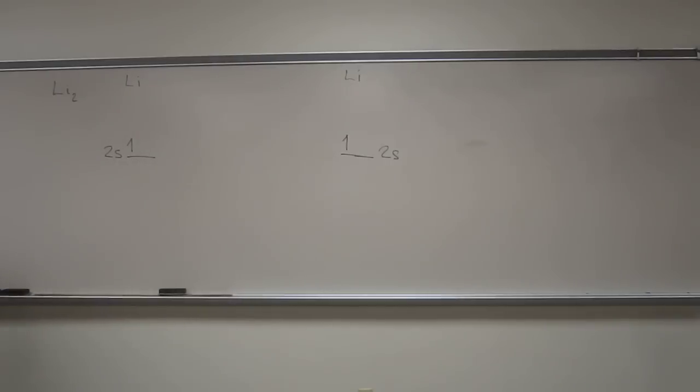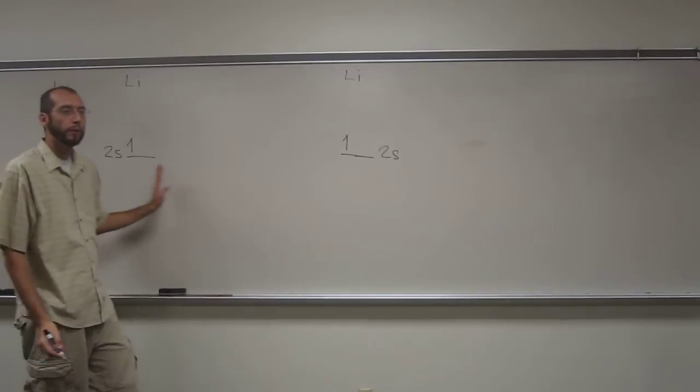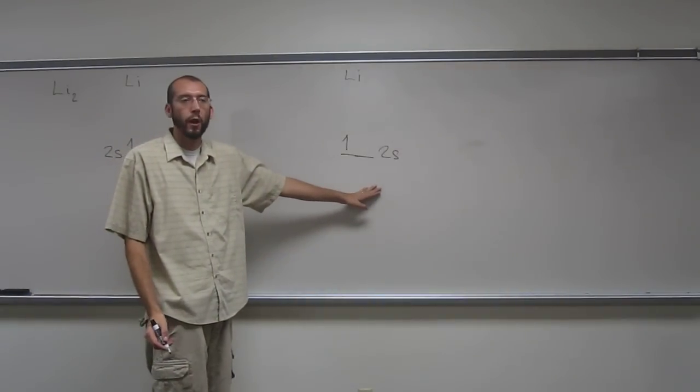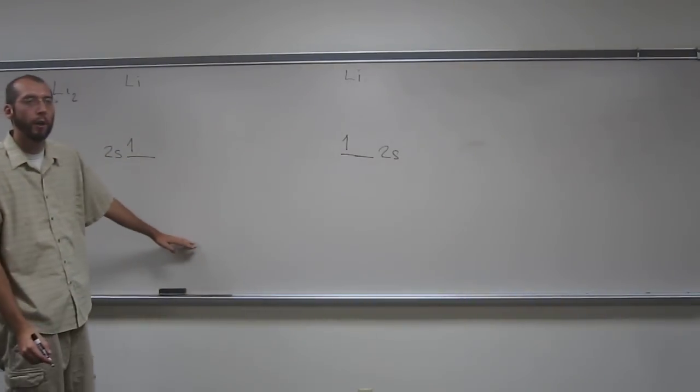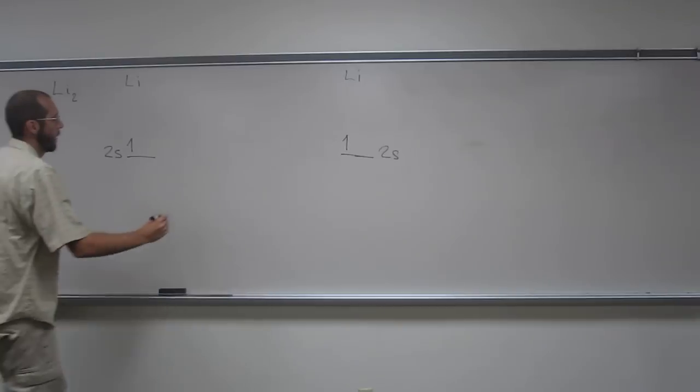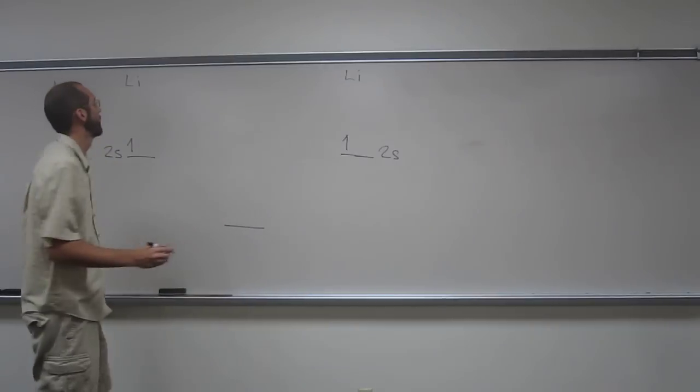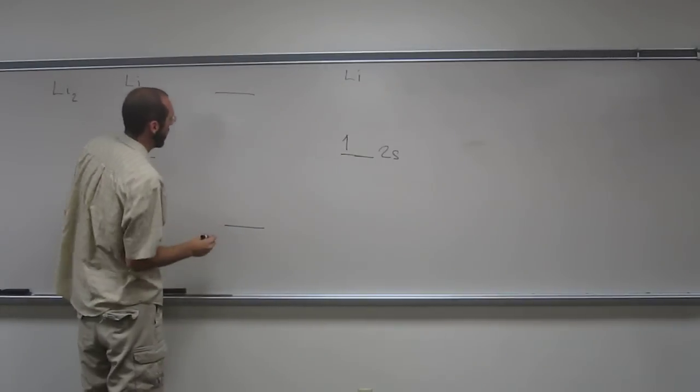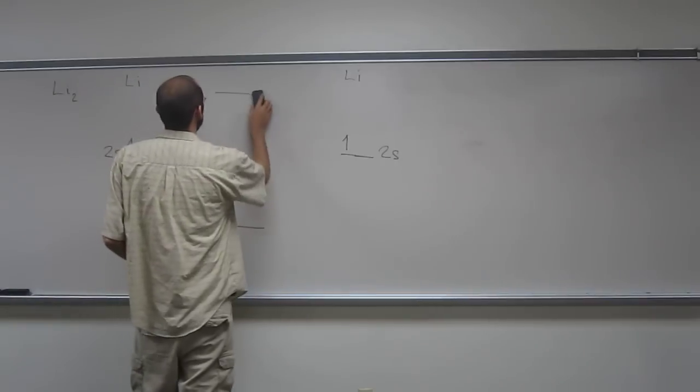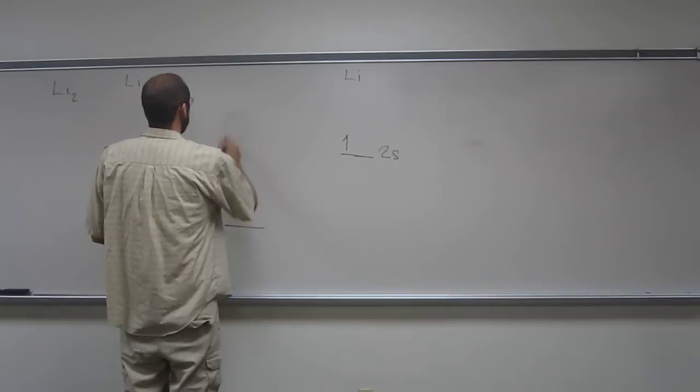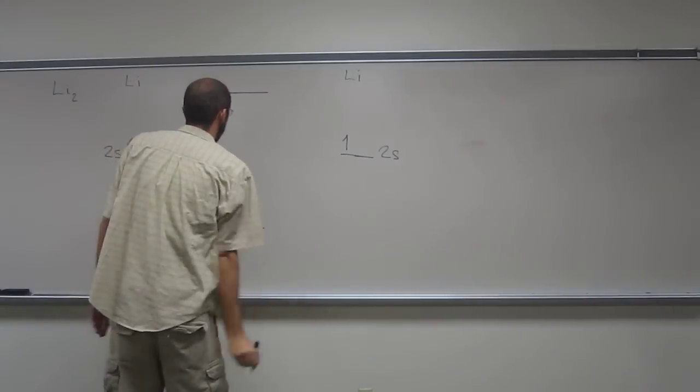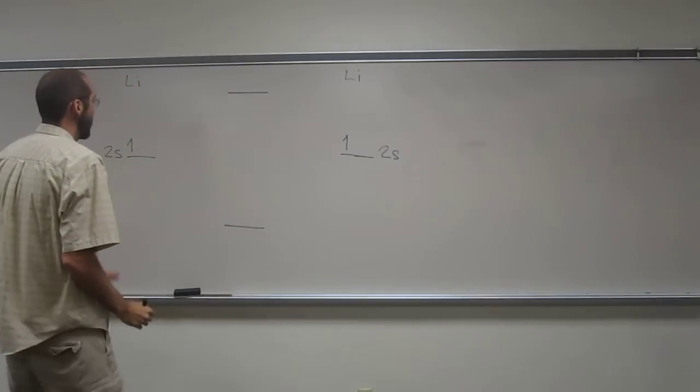So the bonding orbitals for the first bond is going to be a sigma bond, right? So there's going to be, for every bonding orbital, we have an anti-bonding orbital. So we're going to have, okay...